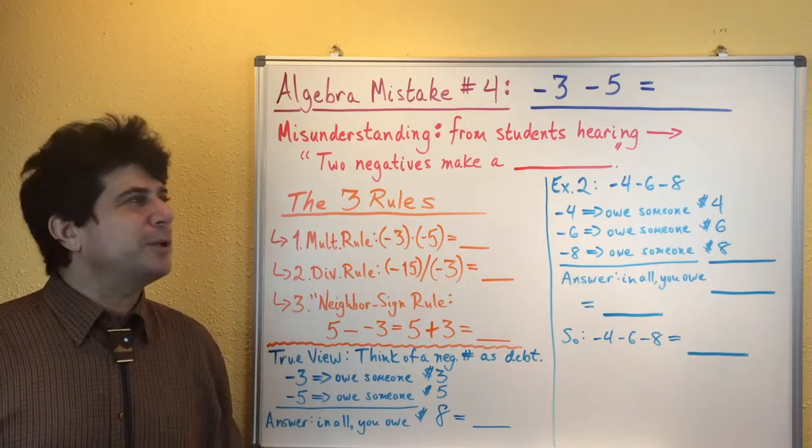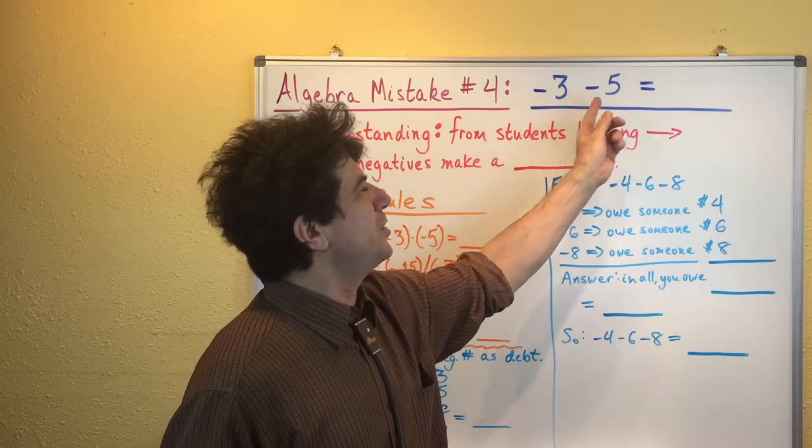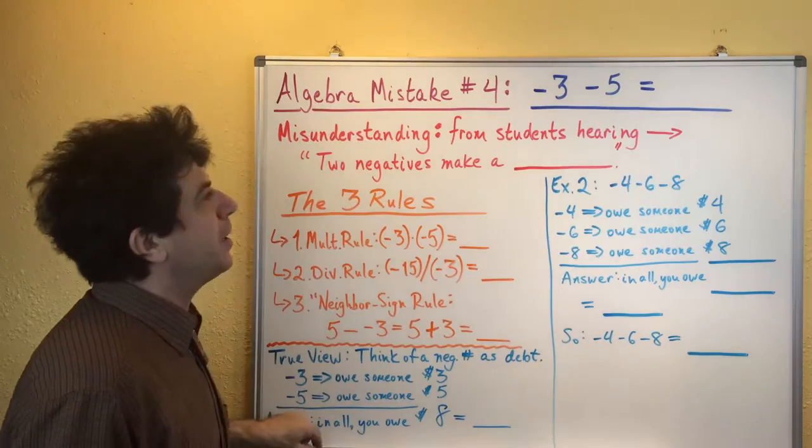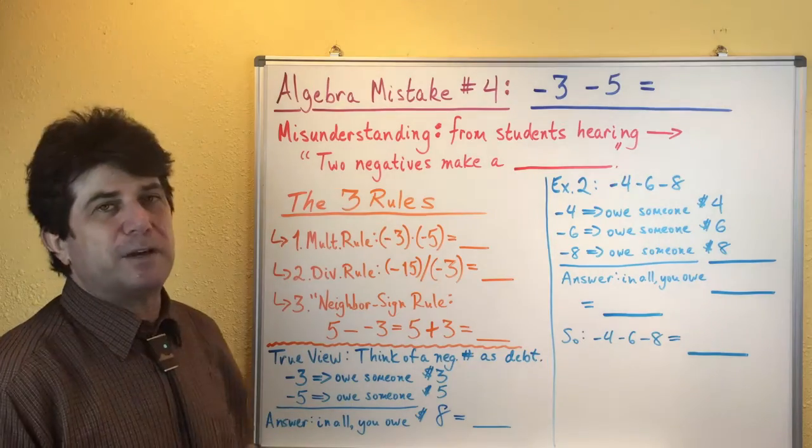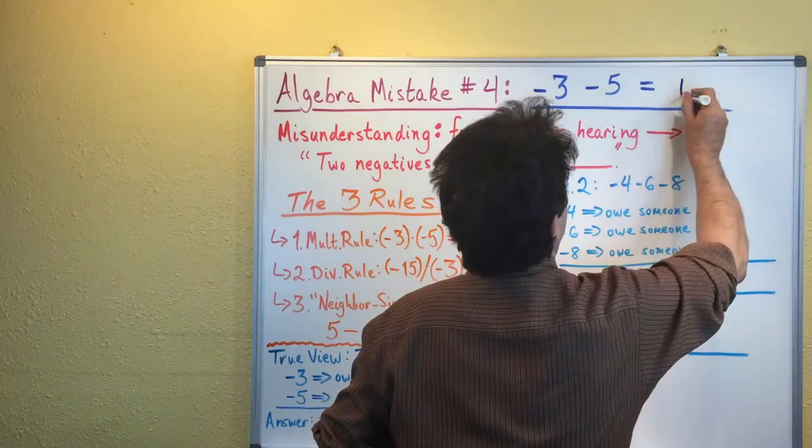This mistake comes about when students see a problem like negative three minus five, when they've got these two negative numbers and they're combining them. And students I found are very often tempted to think that the answer is positive eight.